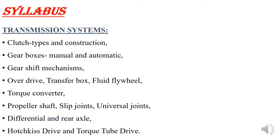Then we covered different types of clutch in the drawing type. In the drawing type we already studied about cone clutches and disc clutches. Then we have three other types: single plate clutch, multi plate clutch, and centrifugal clutch. Today we will discuss about these three clutches — their construction and working. First we will discuss about centrifugal clutch.